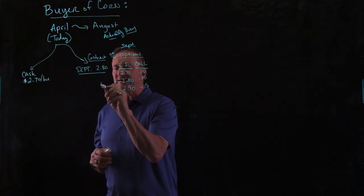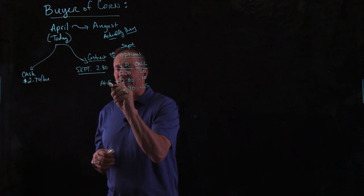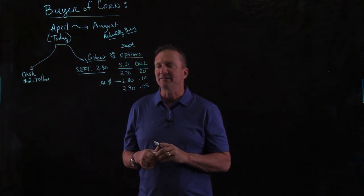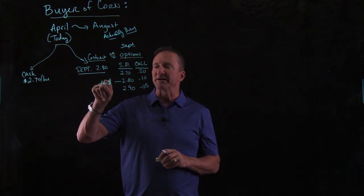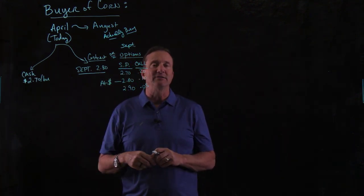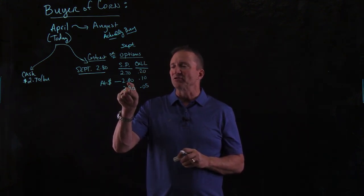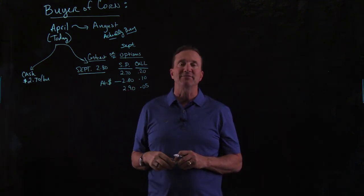$2.80 is called at the money. Why is $2.80 at the money? Because that's where the market is right now, at $2.80. So this strike price is called at the money.